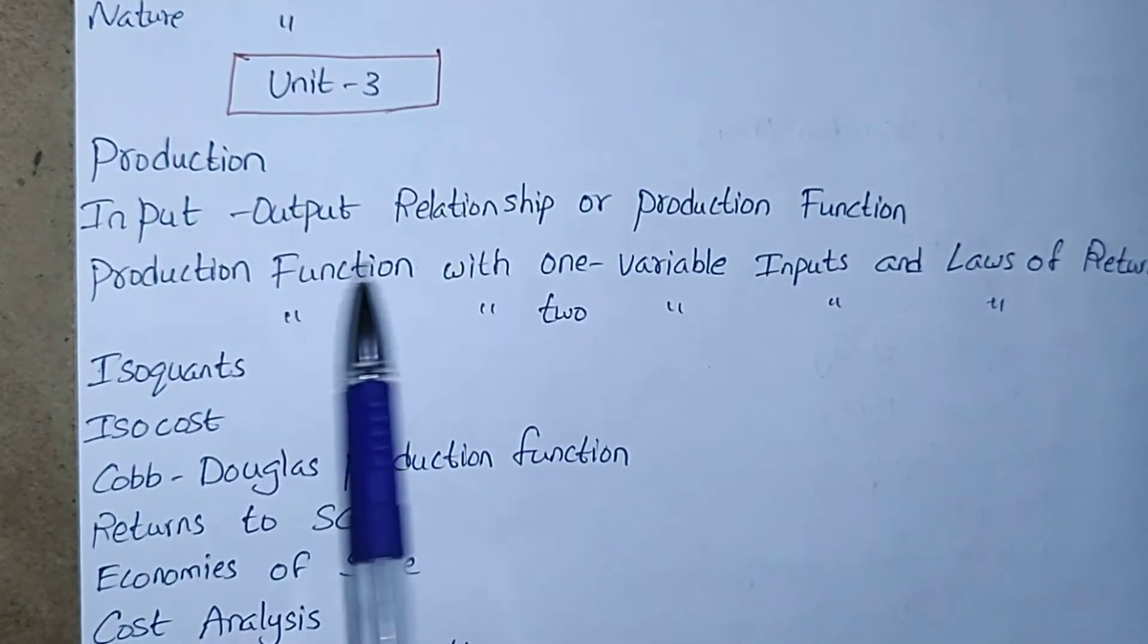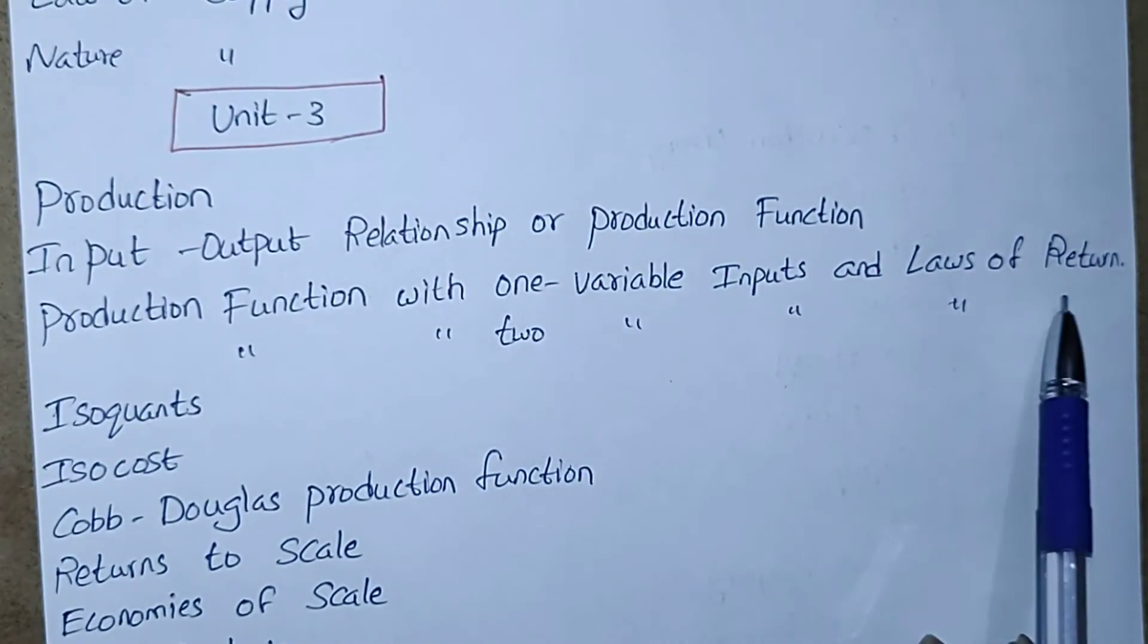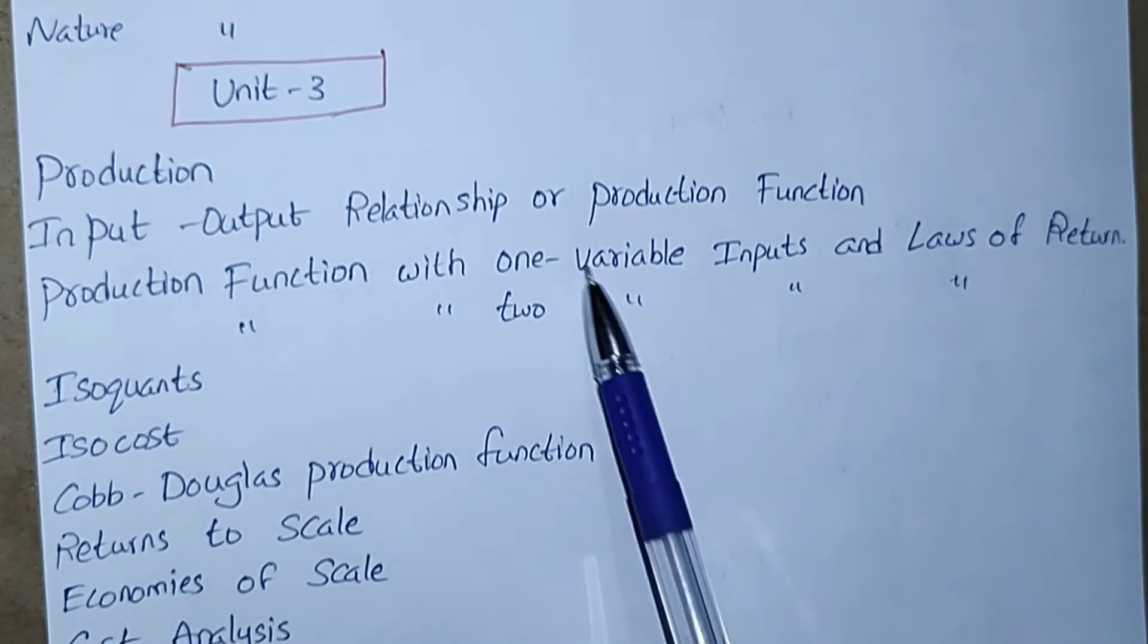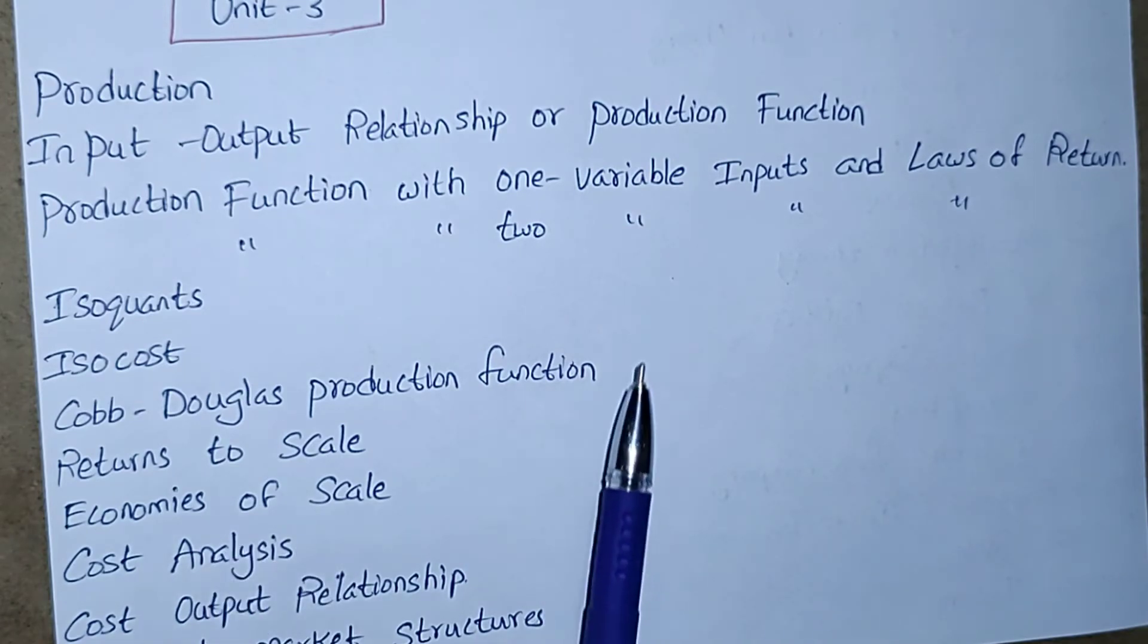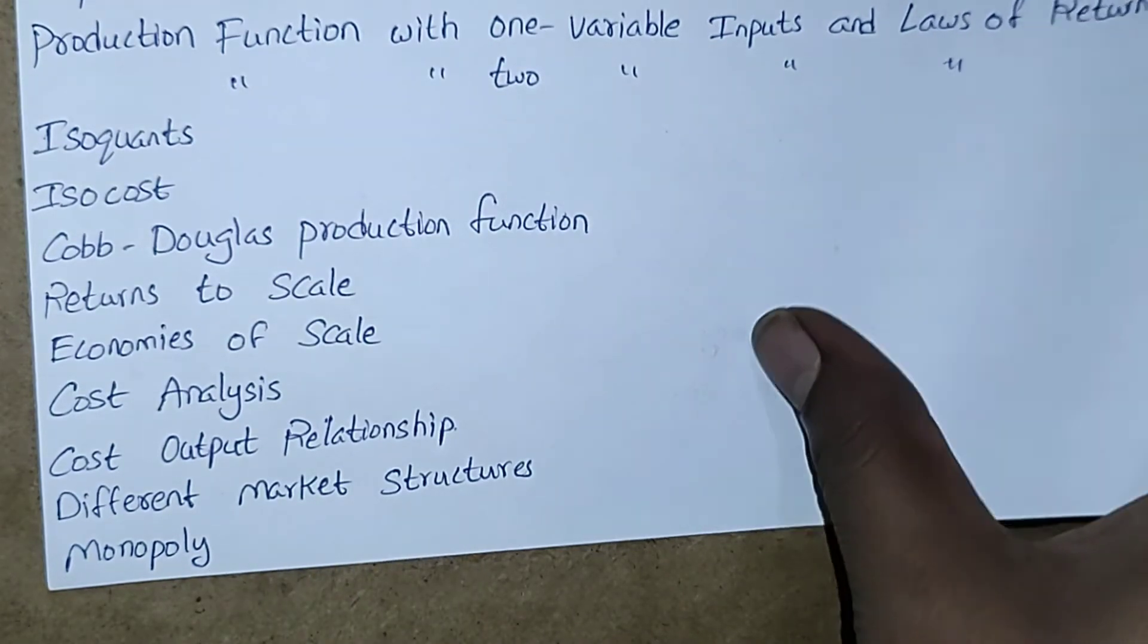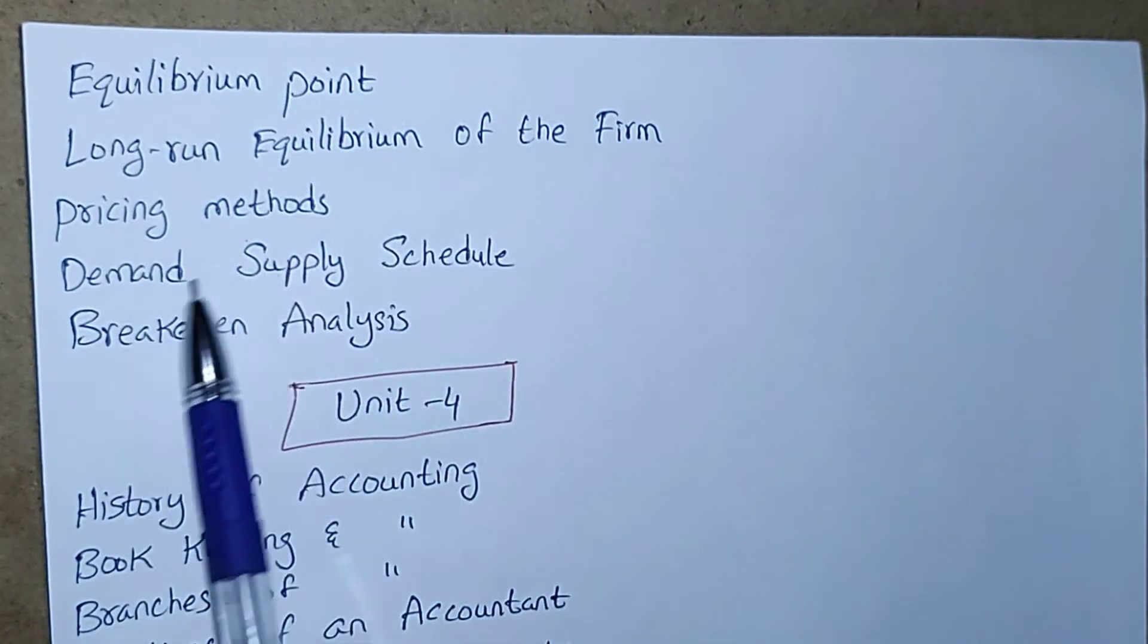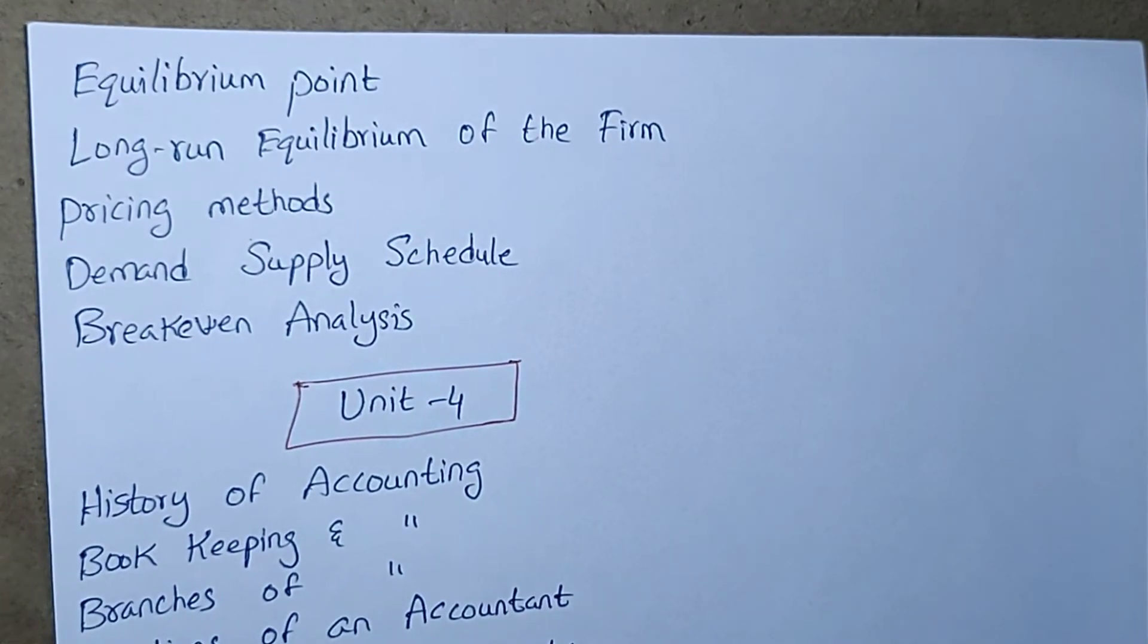We will move to the third unit. Production, input-output relationship or production function, production function with one variable input and law of returns, production function with two variable inputs and law of returns, isoquants, isocost, Cobb-Douglas production function, returns to scale, economies of scale, cost analysis, cost-output relationship, different market structures, monopoly and equilibrium point, long-run equilibrium of the firm, pricing methods, demand-supply schedule, and breakeven analysis. This is your third unit. Definitely you will get a problem from breakeven analysis from your third unit.